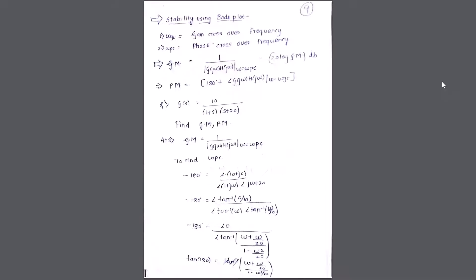The gain margin is given as 1 upon |G(jω)·H(jω)| where ω = ω_pc. Here G(jω)·H(jω) is the open loop transfer function, and ω_pc is the phase crossover frequency.